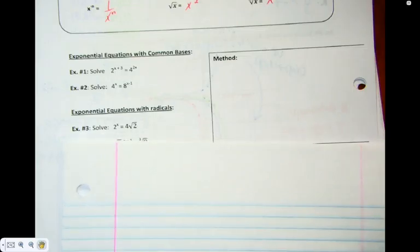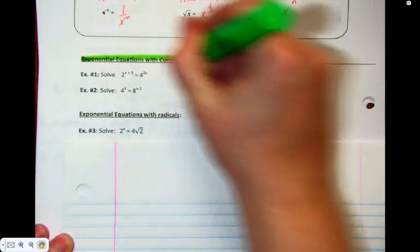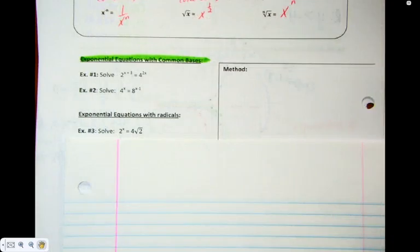So we're starting with the easiest kind of exponential functions, which is when they have what's called common base. And then we'll spend basically the rest of the unit looking at when they don't have common base. Because those are the most common ones.